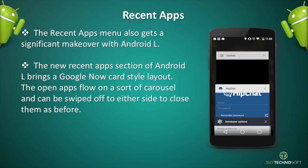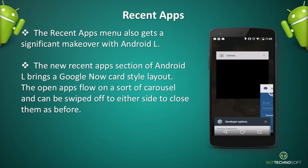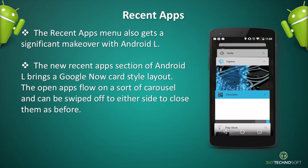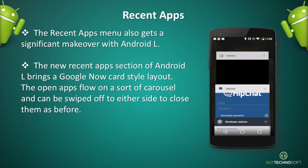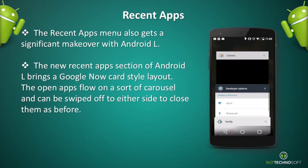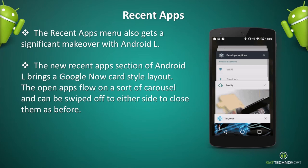The Recent Apps menu also gets a significant makeover with Android L. The new Recent Apps section brings a Google Now card-style layout. The open apps flow on a sort of carousel and can be swiped off to either side to close them, as before.